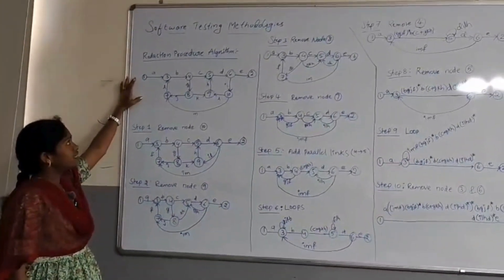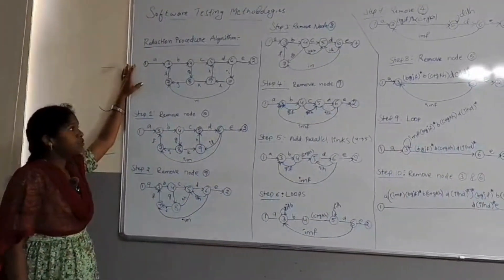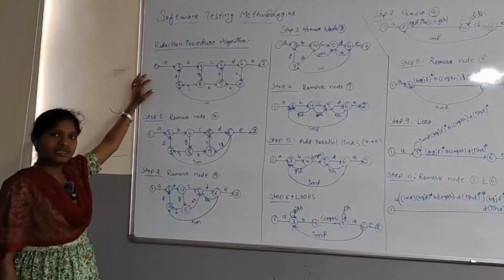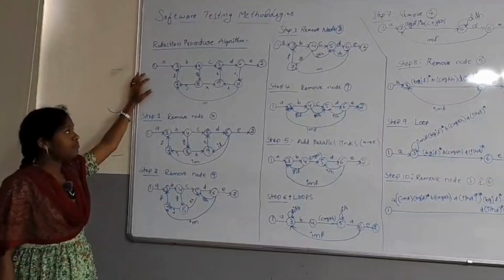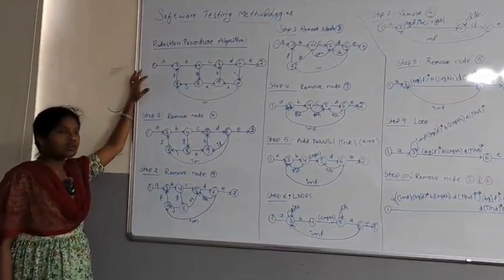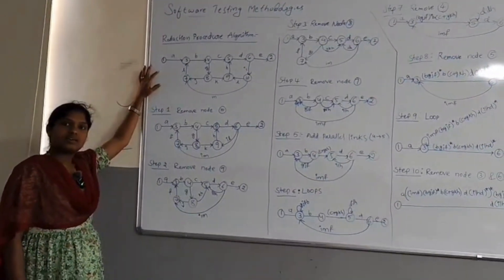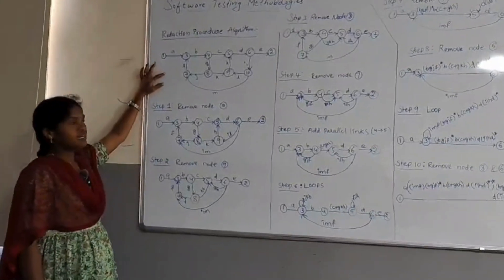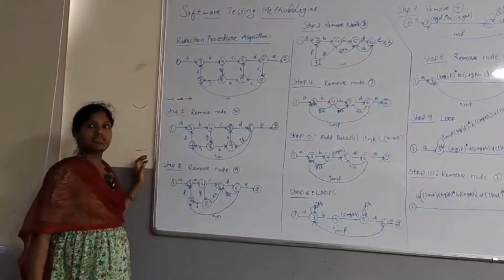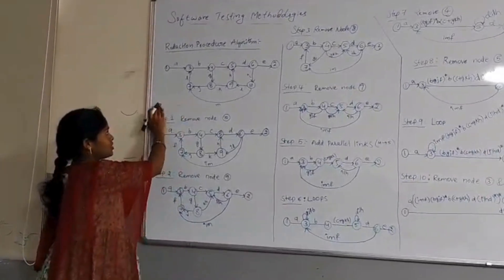We are using the reduction processor algorithm to convert a control flow graph to the path expression. We need to follow some steps to reduce the algorithm. In this algorithm we are removing the nodes one by one. The first step is to combine all the serial links — serial links are those which we have to multiply.